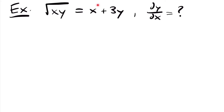Welcome back. Let's start with this example. We have the square root of x times y is equal to x plus 3y, and we want to find the derivative dy/dx of this implicitly defined function.